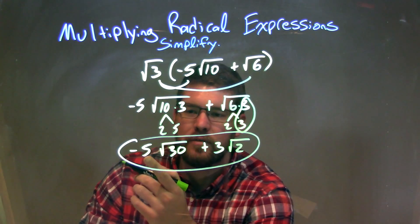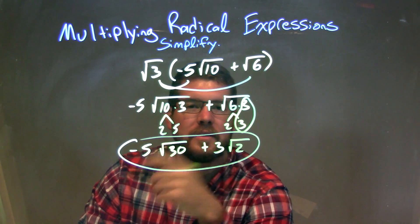And so our final answer here, again, is negative 5 times the square root of 30 plus 3 times the square root of 2.